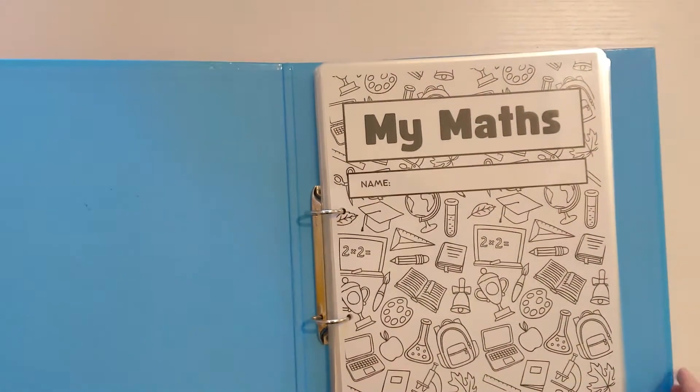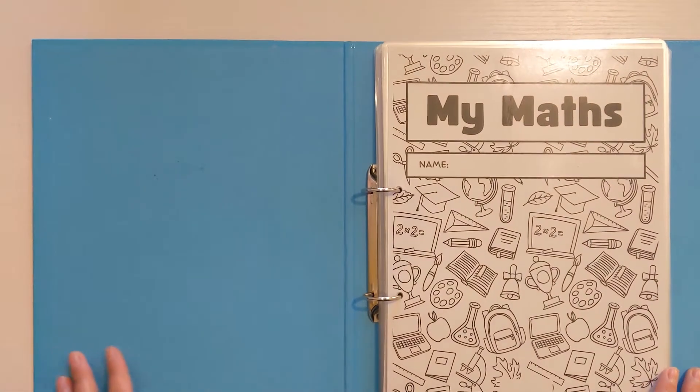What we need for making this folder is an A4 ring binder which is really easy to get, a laminating machine, and of course a printer to print out the sheets. It's really easy to do this yourself at home as I've done here.